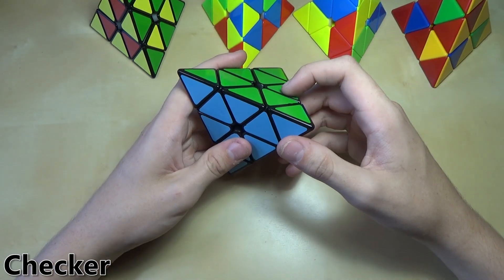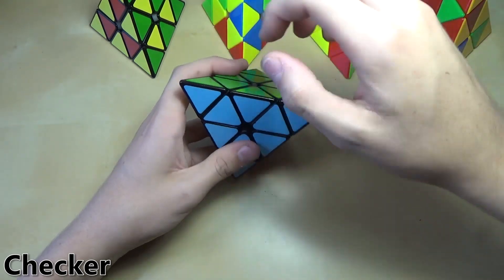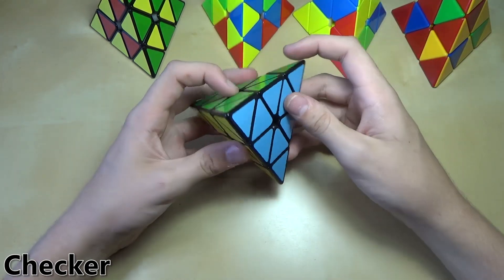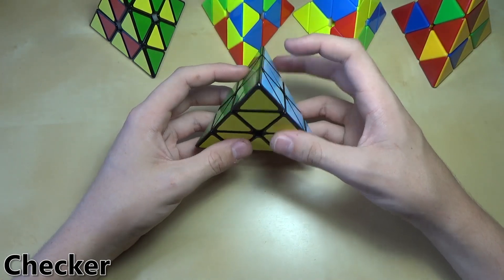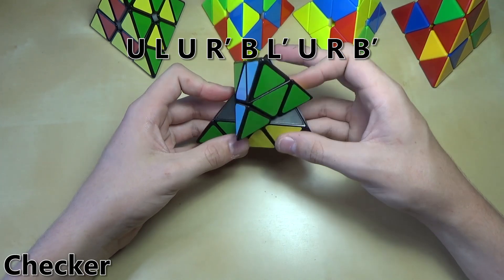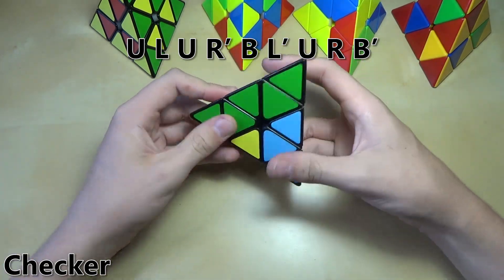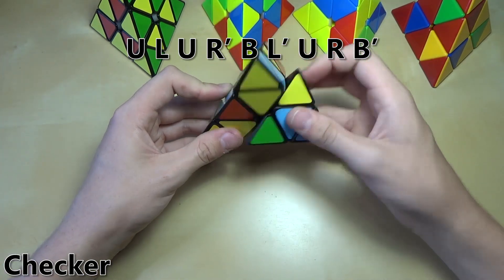What you want to do is identify the two colors that you want to be put together. In my case, I like blue and green, so we'll put those two in the back. What you do is U, L, U, R prime B, L prime U, R, B prime.